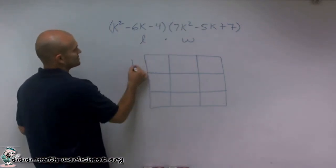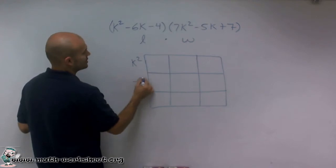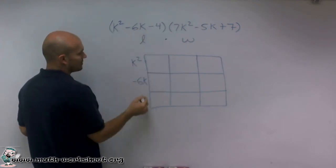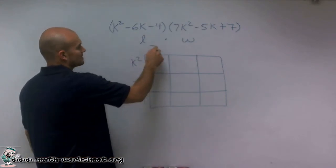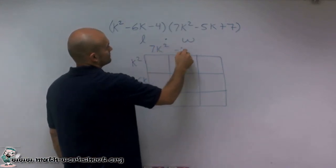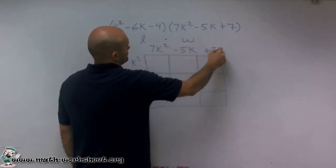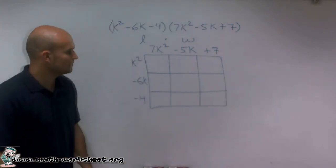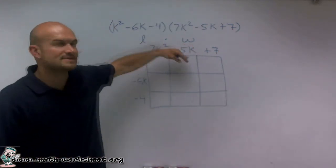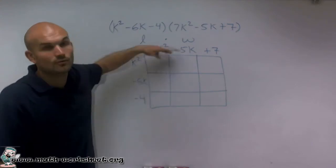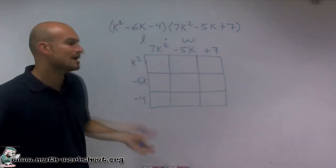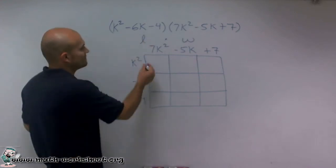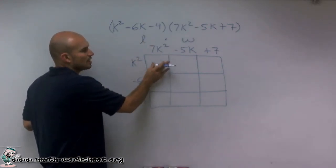So now what I'm going to do is I'm just going to write these out, make sure I keep the value or the sign of each one of those terms with it. So now what I'm going to do is now that I have each one of my terms and I've represented them as a length and a width of a rectangle, now what I can do is I can just multiply to find the area of each one of these rectangles.